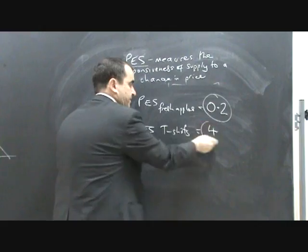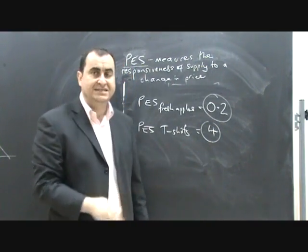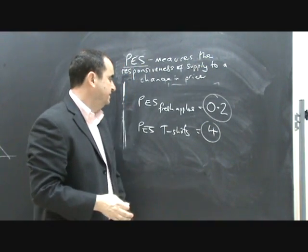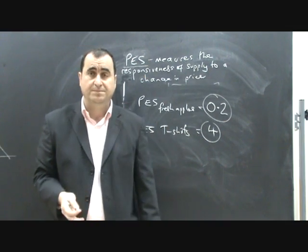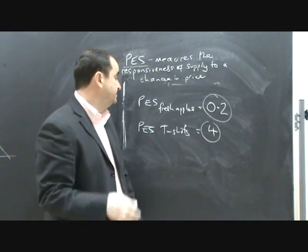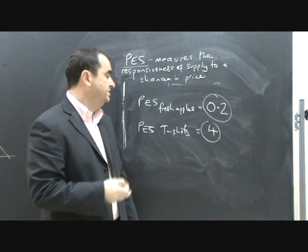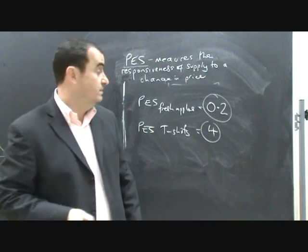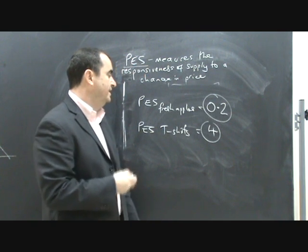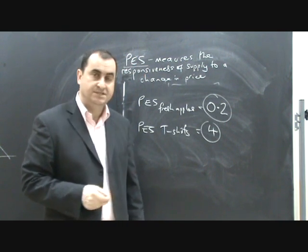For t-shirts, a PES of 4, elastic supply, would imply that when the price of t-shirts changes by 1%, every time it changes by 1%, the supply will change by 4%. It's much more responsive from the price change. So if the price of t-shirts fell by 10%, we might see a 40% fall in the quantity supplied of t-shirts.